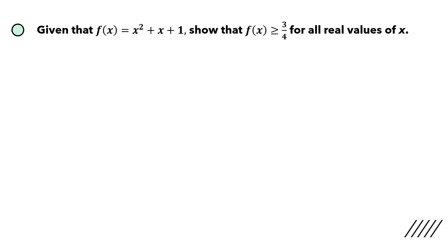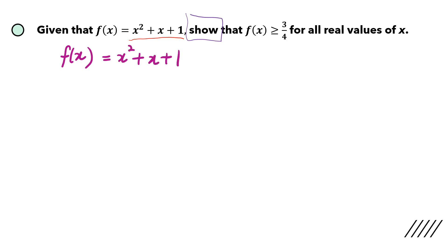Let's look at the second question. If you look at the second question, we can see that it is not in the completed square form. So what we need to do is to change it into completed square form before we do the explanation. You're supposed to show that the function f(x) will always be greater than or equal to 3 quarters for all real values of x. The first step is to convert x squared plus x plus 1 into the completed square format.